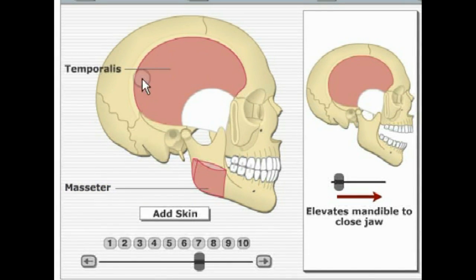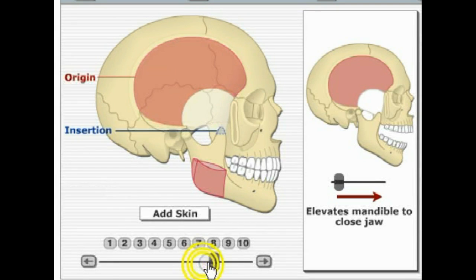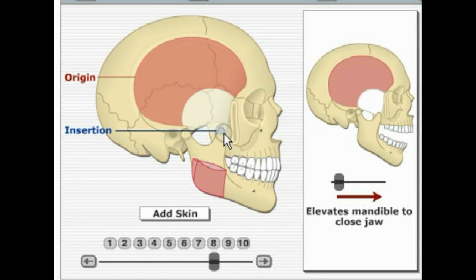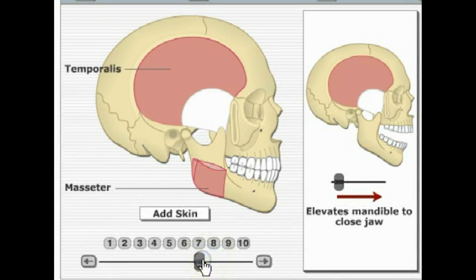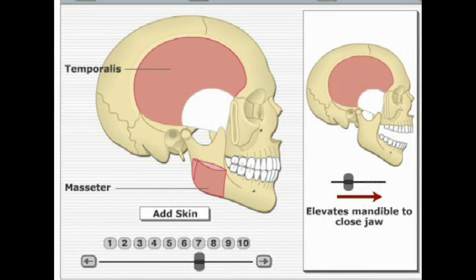Next, we're looking at the temporalis muscle. It originates on the temporal bone of the cranium and inserts on the coronoid process of the mandible. It acts hand in hand with the masseter in elevating the jaw.